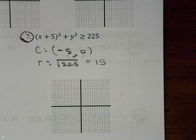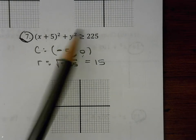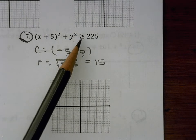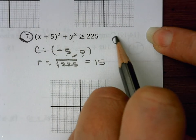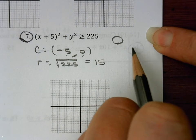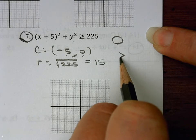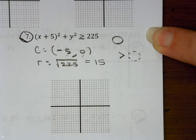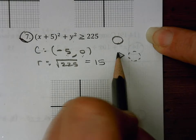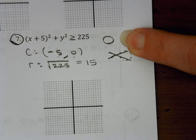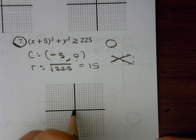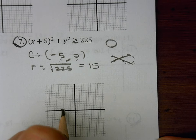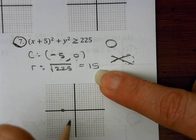This one is an inequality graph. Because I have a less than or equal to symbol, I need to be careful. Since it has the equal sign, it's a solid line, so when I graph it I want to make sure I do a solid line — not dotted. So I'm going to go to negative 5, 0, and then go all directions 15 units.